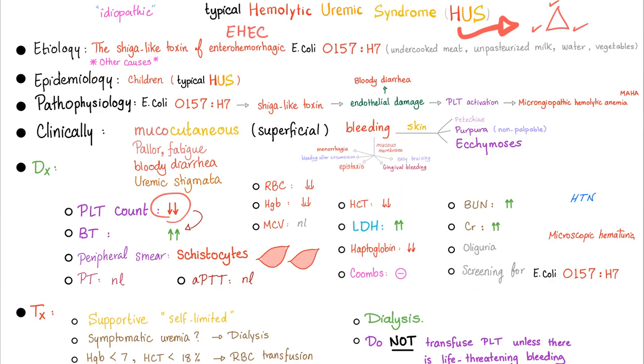You can also screen for EHEC — E. coli O157:H7. Treatment: it's a self-limited disease.